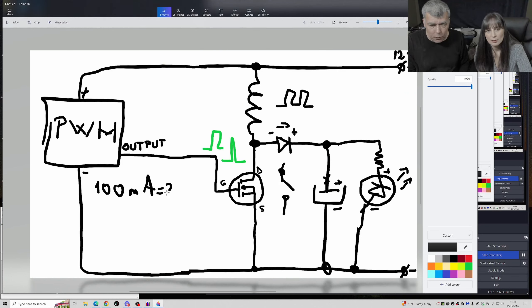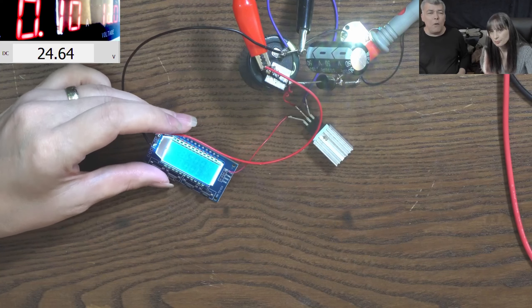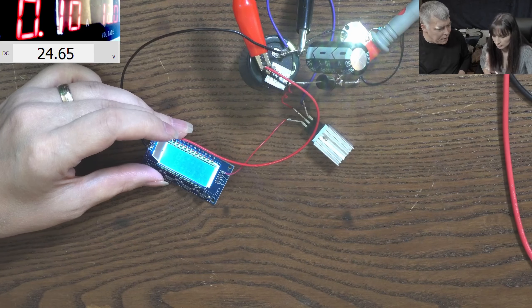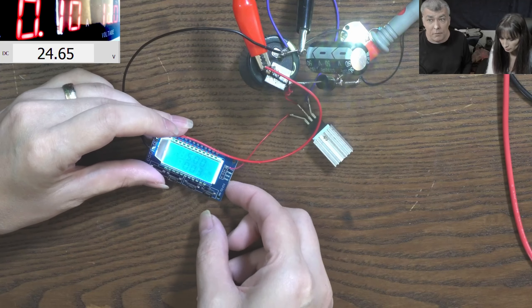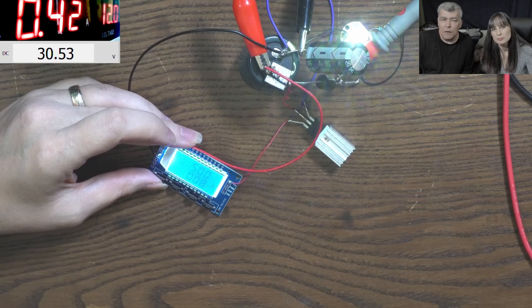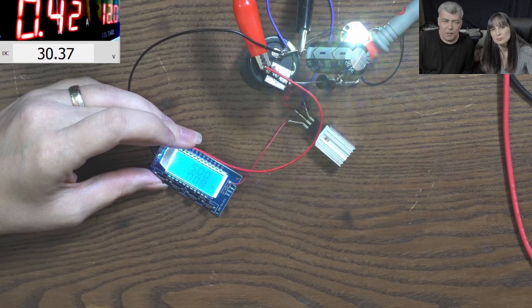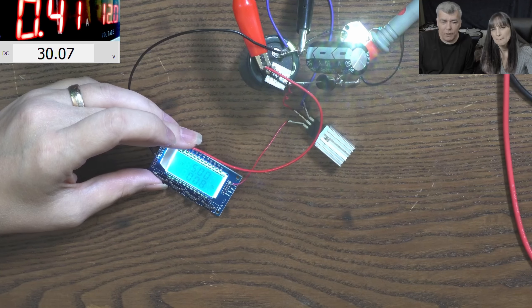100 milliamps, 24.27 volts at what frequency? 5 kilohertz. Now I want more voltage. Let's increase the current. Increase the duty cycle. Let's make it 400 milliamps. Like 420 milliamps here. We have like 30 volts. Okay, let's write that down.